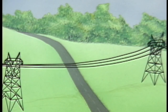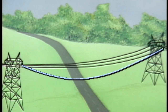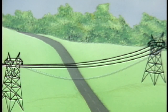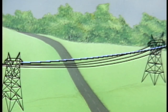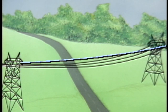Maintaining proper clearances is an important safety and operation concern. Too much sag in a wire could allow wind to cause a conductor to sway into other conductors or a structure, resulting in a fault condition. Too little sag could place excessive strain on structures and conductors, causing them to weaken or break.